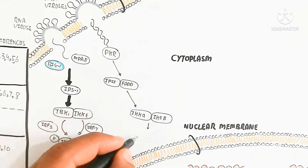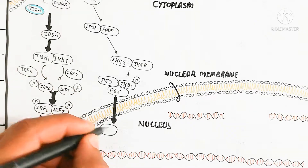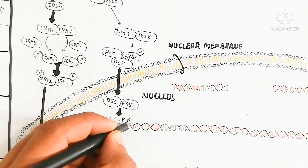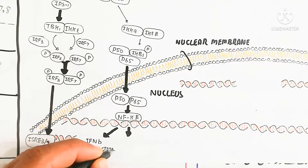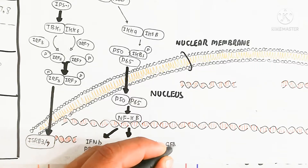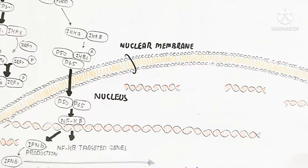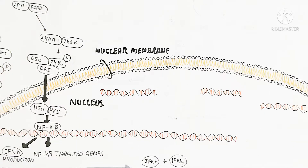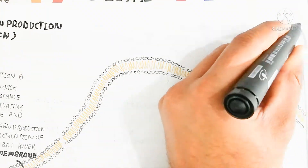Another pathway involves PKR — this protein kinase receptor stimulates IPS1 and FADD, which stimulate IKKα and IKKβ. These stimulate p50, p65, and IκB, and complex formation triggers NF-κB. NF-κB target genes can lead to apoptosis. Importantly, interferon beta is also produced through this pathway, which is used for apoptosis of other cells.